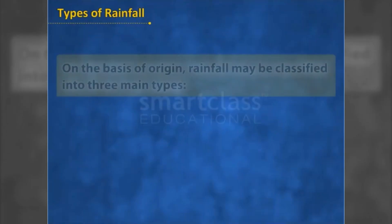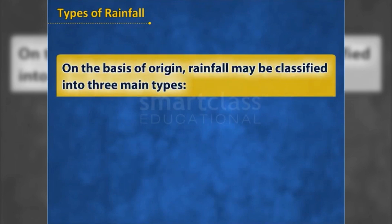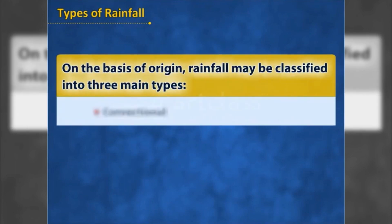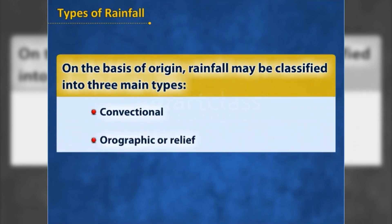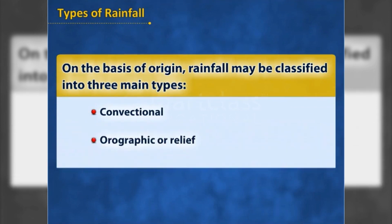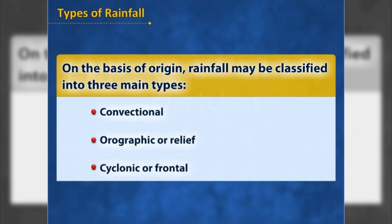Types of rainfall: on the basis of origin, rainfall may be classified into three main types — convectional, orographic or relief, and cyclonic or frontal.